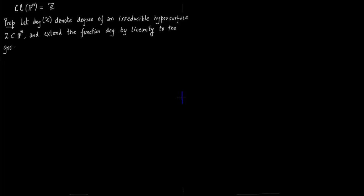Extending the function by linearity means the group of divisors would be summation N_i times D_i where D_i will be the divisors. You take the degree of the hypersurfaces inside or degree of the codimension 1 varieties inside. Obviously we are talking about codimension 1 varieties in P^n.